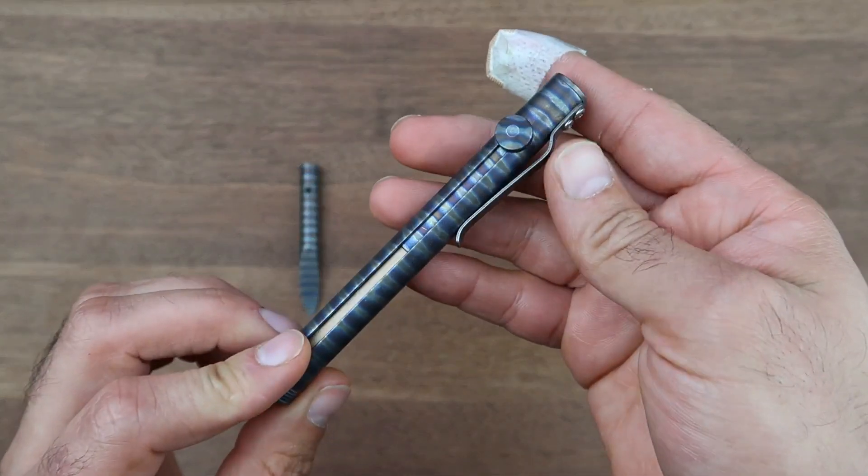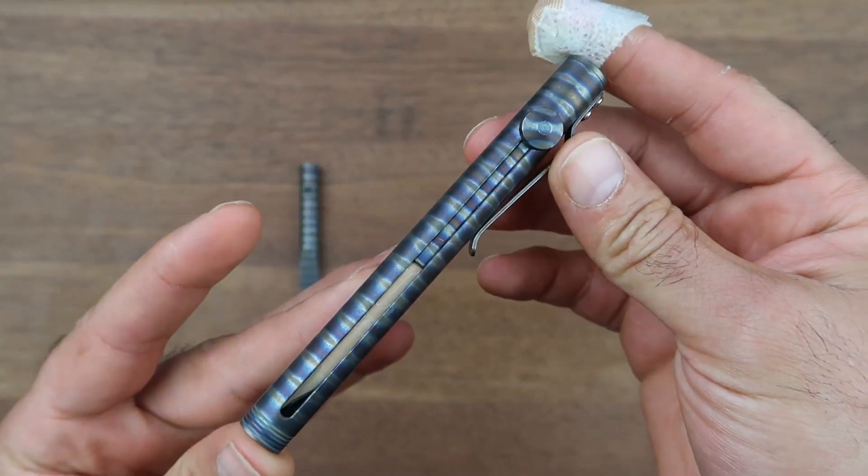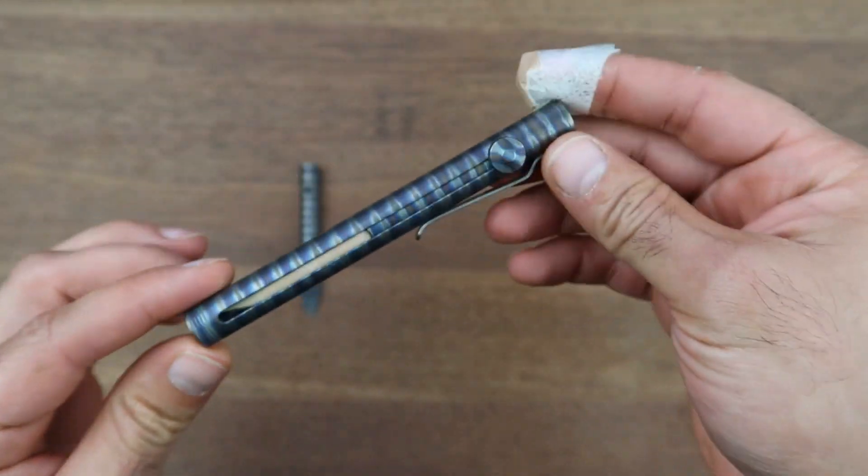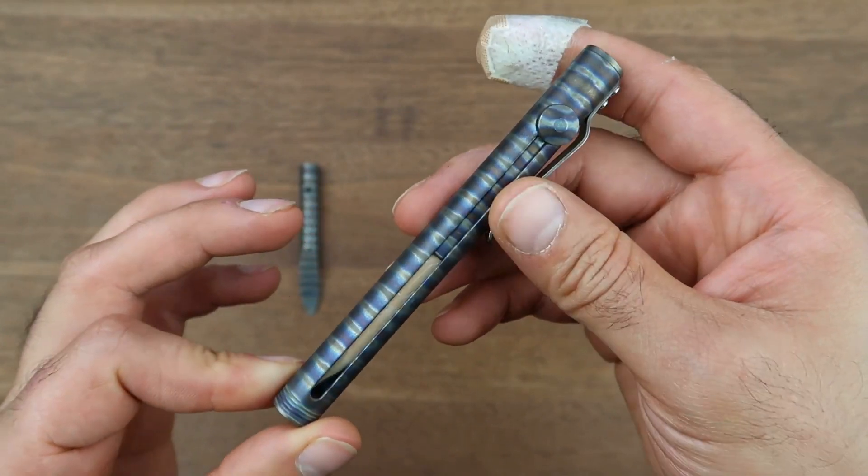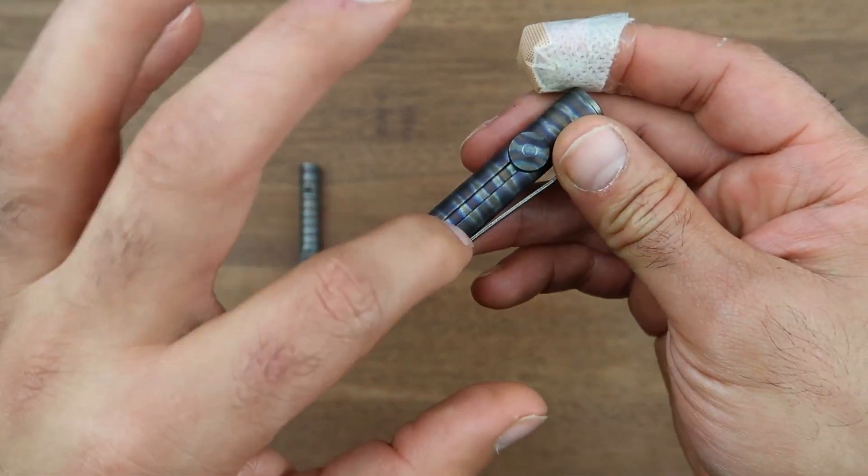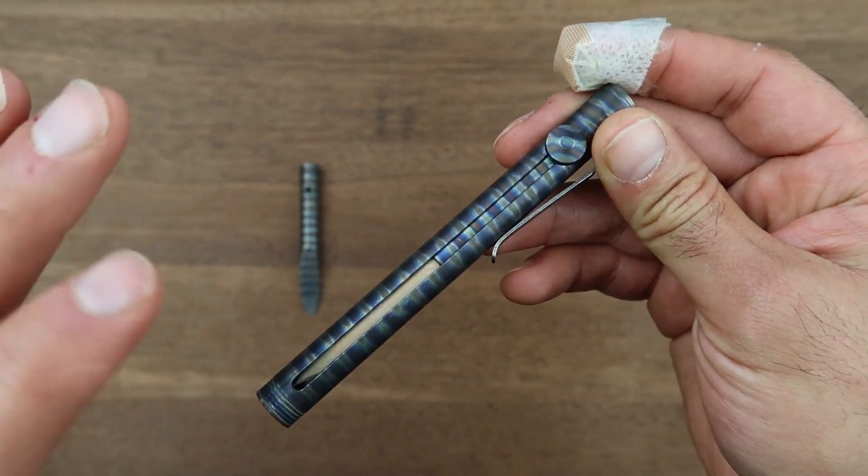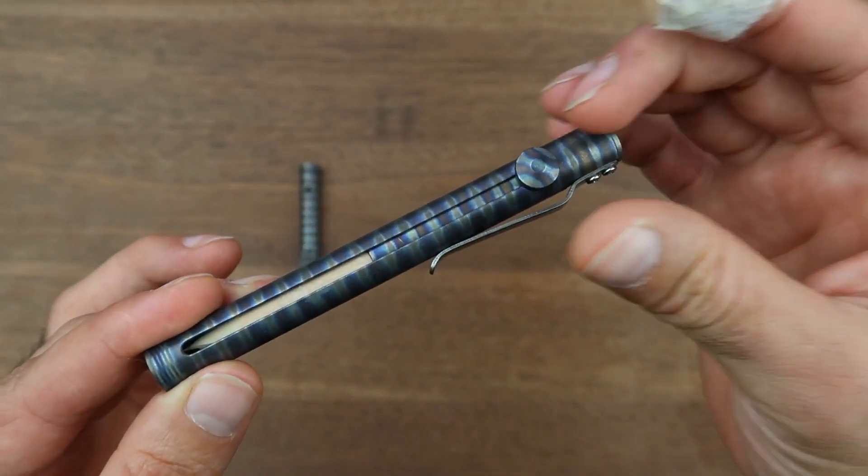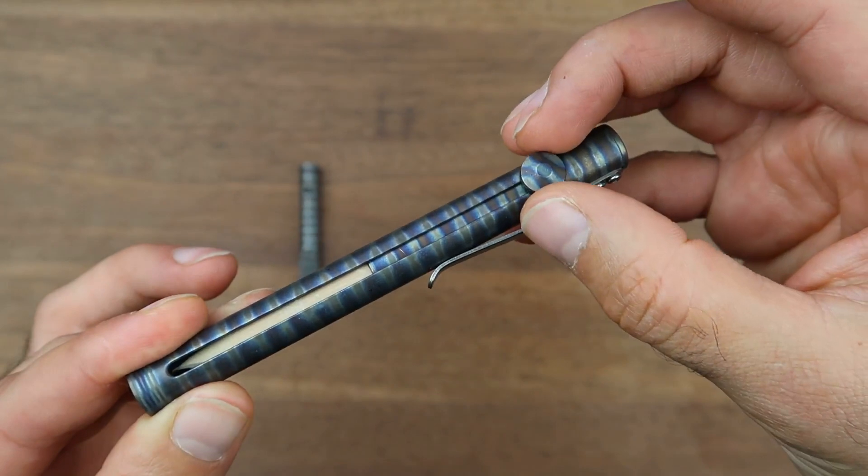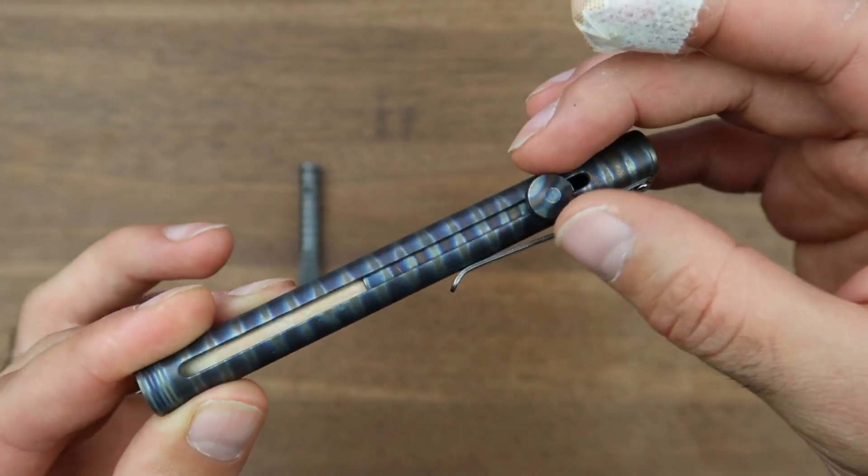The construction of the pen itself is pretty simple. It's made of a main titanium tube with a titanium pocket clip and there's a slider inside this tube that holds the pencil insert.